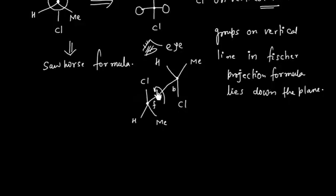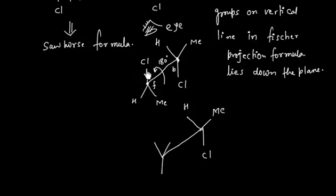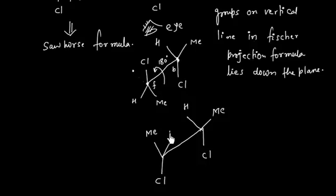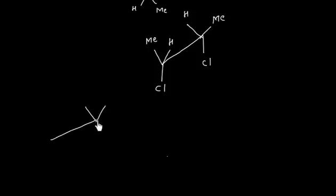This chlorine is away from the Y — that is downside the plane — but this chlorine is not away from the Y. So what we will do is rotate this bond. If I rotate this bond by 180 degrees, this carbon remains as it is. So we have hydrogen here, methyl here, and chlorine. After rotating Y 180 degrees it will become an upward Y.